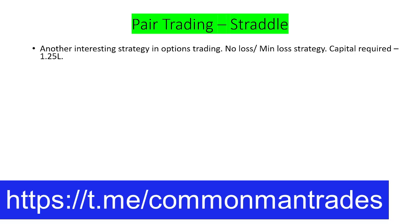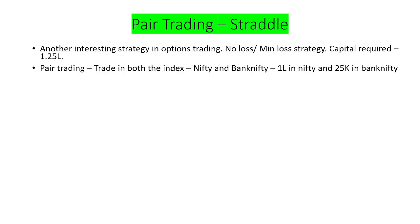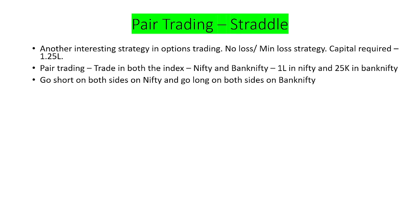This is yet another interesting strategy in option selling — a kind of no-loss or minimum-loss strategy. The capital required is 1.25 lakhs. Pair trading means we are going to trade in both indices, Nifty and Bank Nifty. Capital required for Nifty is 1 lakh and for Bank Nifty is 25,000. We go short on one index and long on the other, so one hedges the other. Since Bank Nifty is more volatile, we go long on Bank Nifty and short on Nifty, so that when the market is volatile, Bank Nifty collects more premium.